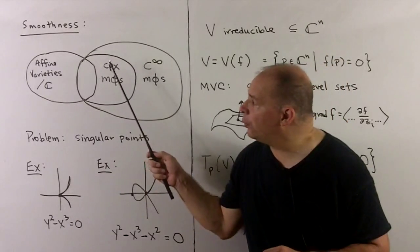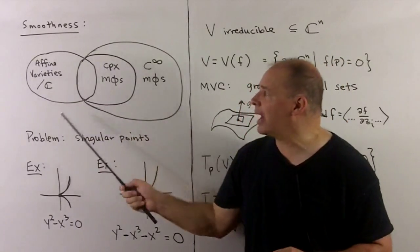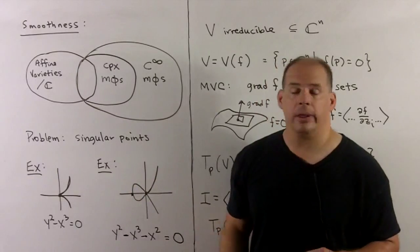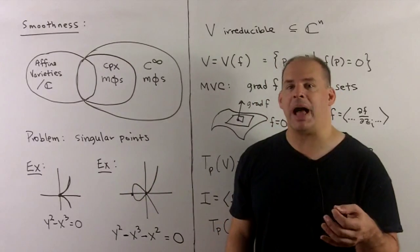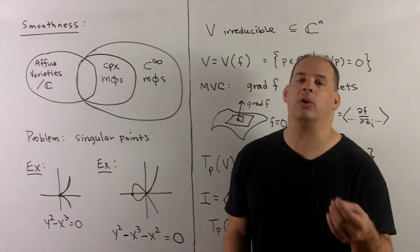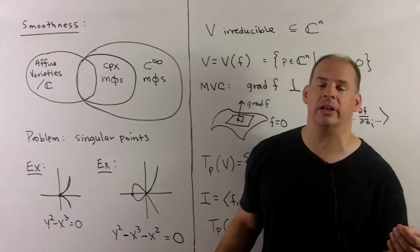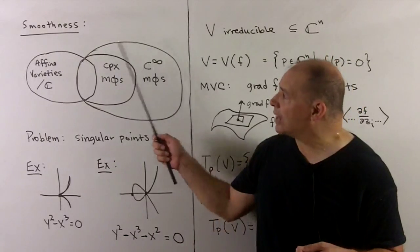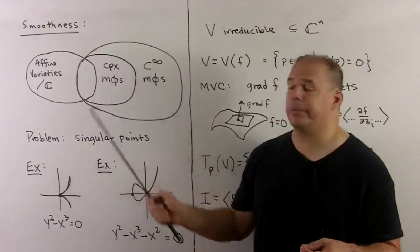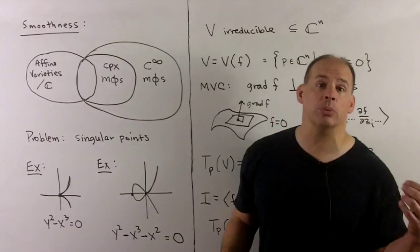If we're considering affine varieties over the complex numbers, we're taking zero sets of polynomials. These polynomials satisfy a holomorphic condition, so when things are nice, we're actually looking at complex manifolds, and then you can pull back—these will also be smooth manifolds.